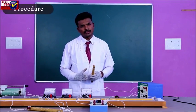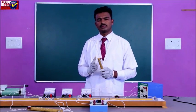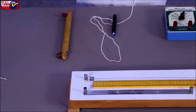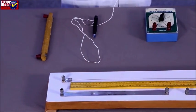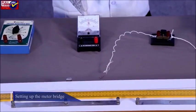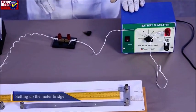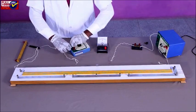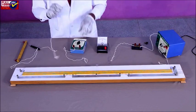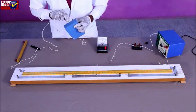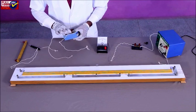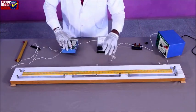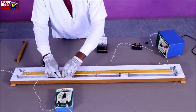Procedure: A meter bridge, also known as a slide wire bridge, is based on the principle of Wheatstone's bridge. It is used to measure the unknown resistance of a wire by measuring its length. Setting up the meter bridge: clean the insulation at the ends of the connecting wires by rubbing with sandpaper. Tighten all the plugs of the resistance box by pressing and turning each plug. Make tight connections as per the circuit diagram.